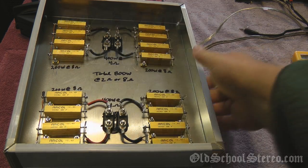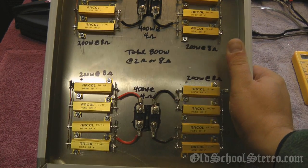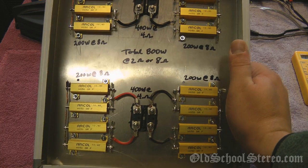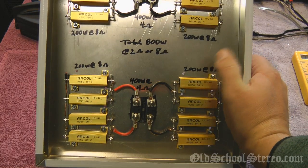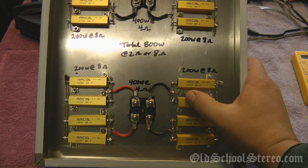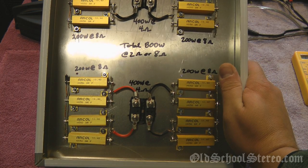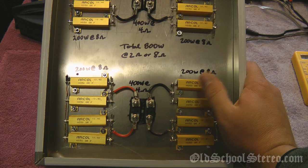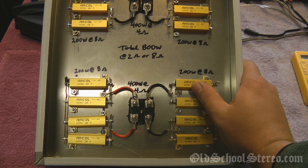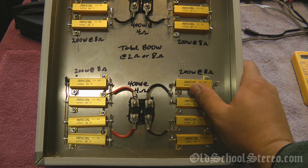What we have here, first we're going to start with the resistor load, they call it the dummy load, and as you can see I have it labeled here. Each of these resistors is 50 watts at 8 ohms and I have parallel series configuration set up so that we have four separate 200 watt loads at 8 ohms.